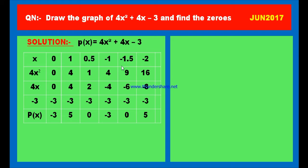Let us check x equals minus 1.5 (that is, 3 by 2): 4x squared is 4 times 9 by 4 equals 9; 4x is 4 times minus 1.5 equals minus 6; constant is minus 3. 9 minus 6 minus 3 equals 0. So when x equals minus 1.5, P of x equals 0. The points on the graph are: (0, minus 3), (1, 5), (0.5, 0), (minus 1, minus 3), (minus 1.5, 0), and (minus 2, 5).